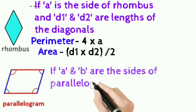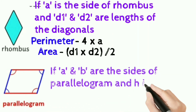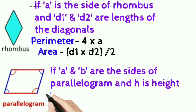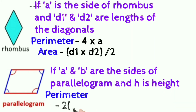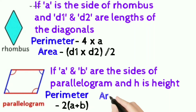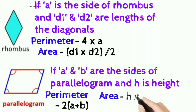Parallelogram: if a and b are the sides of the parallelogram and h is the height, perimeter of the parallelogram is 2 into (a plus b), and area is height into base.